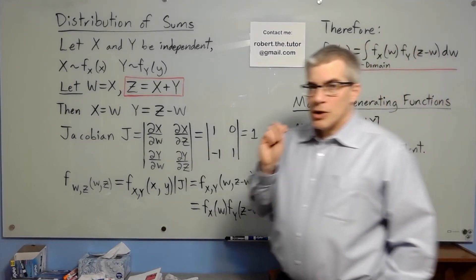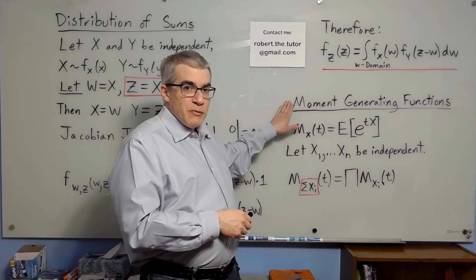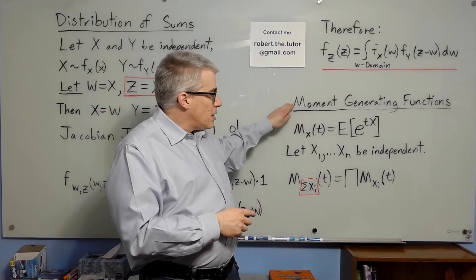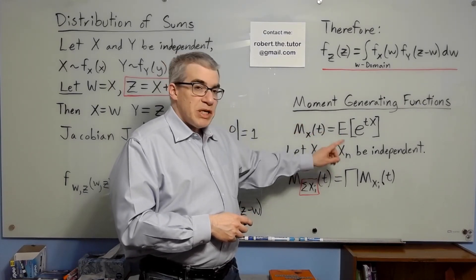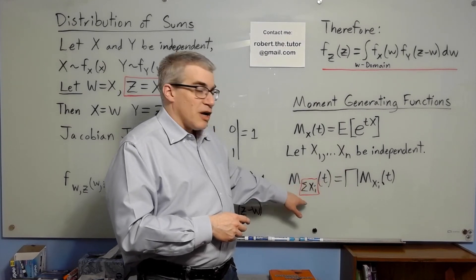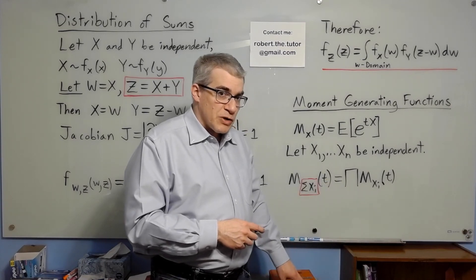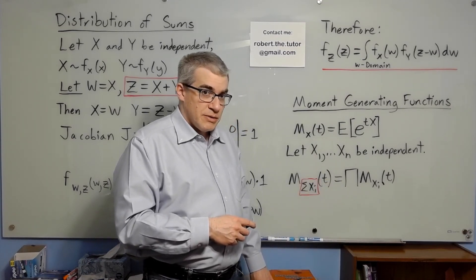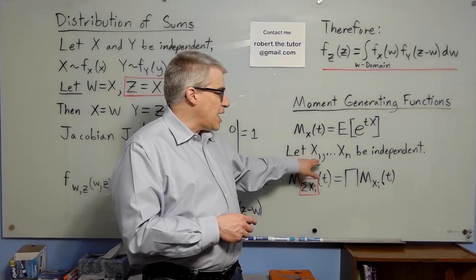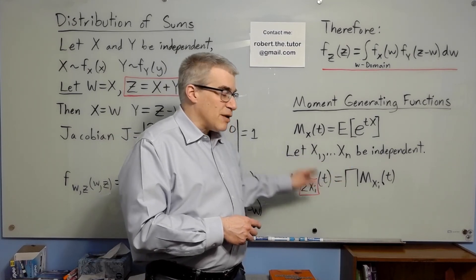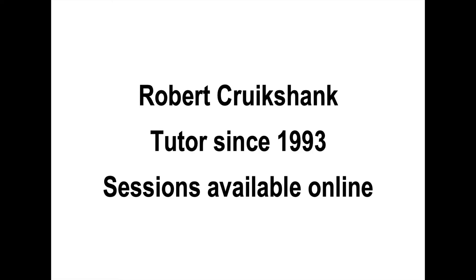That's how you do it the hard way with two variables. What if you have lots of variables? We use moment-generating functions, or MGFs. The MGF is defined like this, and there's a theorem that states: let x1 to xn be independent. The moment-generating function of a sum of random variables is the product of all the moment-generating functions of the individual variables. So if you know the MGF for each of your input variables, and you can recognize the product of those MGFs, then you have found the distribution for the sum.